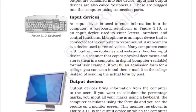The input device is used to enter information into the computer. A keyboard is an input device used to enter letters, numbers, and control functions. A microphone is an input device connected to computers to record sound. With the keyboard you can type text. A mouse is a pointing input device. A scanner is also an input device for scanning. A webcam is an input device for capturing images.